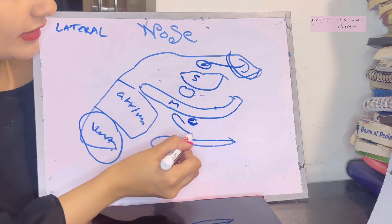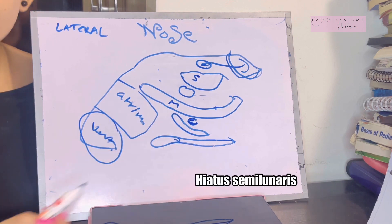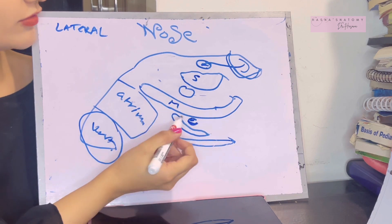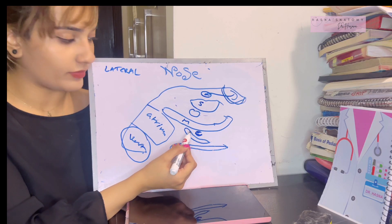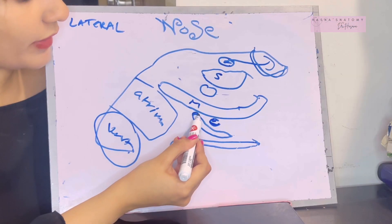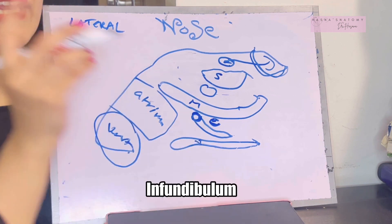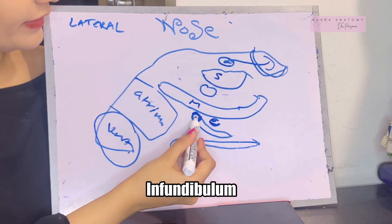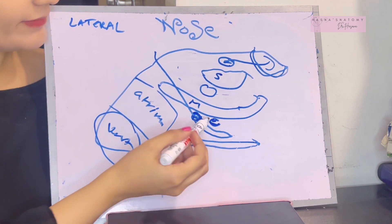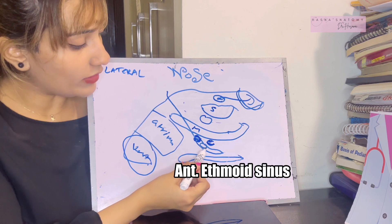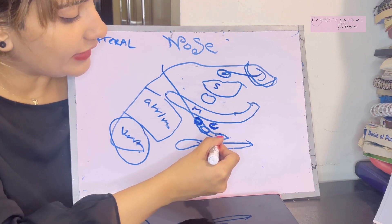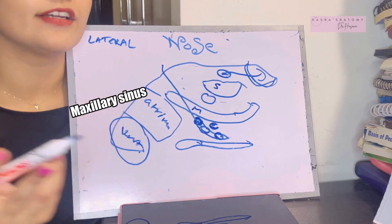Draw the sulcus known as the hiatus semilunaris, lying just below the ethmoidal bulla. Within the hiatus semilunaris, the uppermost or anterior-most part is known as the infundibulum. In the infundibulum lies the opening of the frontal air sinus. Going below the infundibulum, we have the opening of the anterior ethmoidal air sinus. And then most posteriorly lies the opening of the maxillary air sinus.